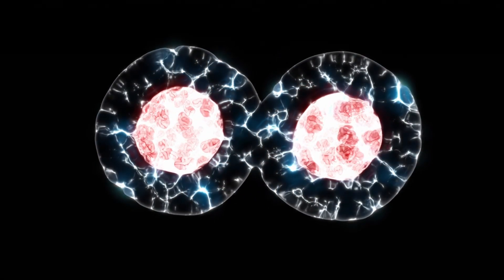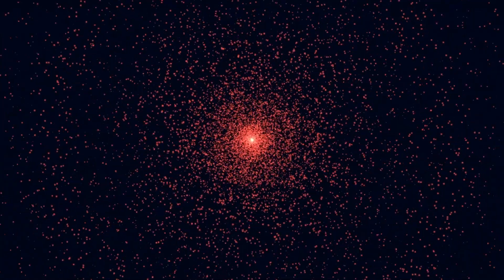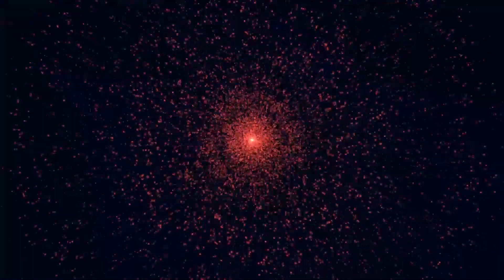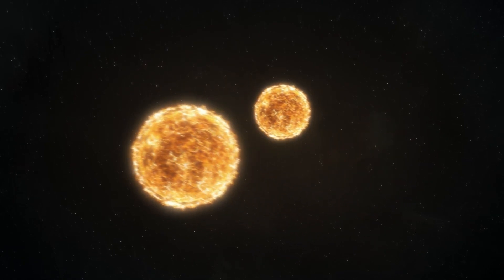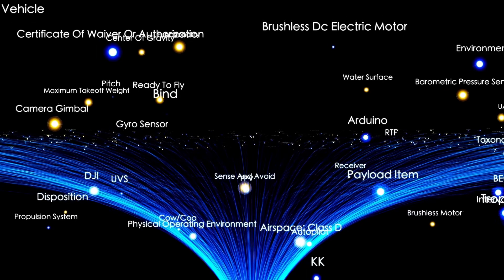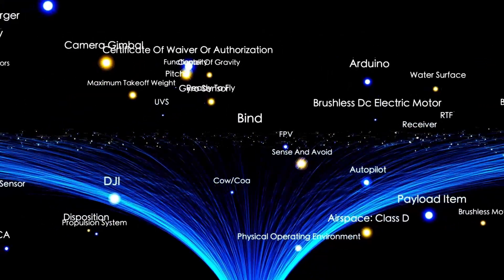Imagine our sun spitting out something the size of a small planet and then multiply that by billions. That's what Betelgeuse did. As this cloud cooled, it formed a dusty veil that shrouded the star, causing the observed dimming.